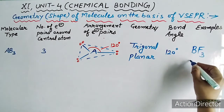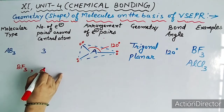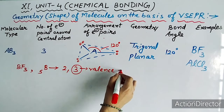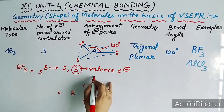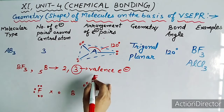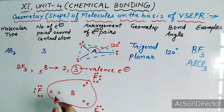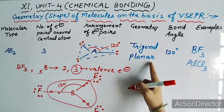Examples में boron trifluoride (BF3) और aluminium trichloride (AlCl3) आते हैं। BF3 में central atom boron का atomic number 5, electronic distribution 2,3 — 3 valence electrons। Boron इन 3 electrons को 3 fluorines के साथ share करता है। Fluorine का atomic number 9, 7 valence electrons। Bond angle 120 degree आता है, and that results in the formation of trigonal planar shape।